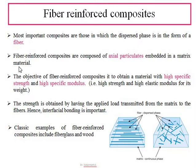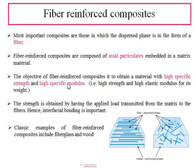The major aim or objective of the composite is to increase a material's specific strength, or to obtain a material with high specific strength and high specific modulus. Specific strength is the ratio of strength per unit density. Similarly, specific modulus is the elastic modulus per unit density or mass density. The major aim of the fibers is to increase tensile strength, or the stress-carrying capacity of the material.